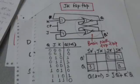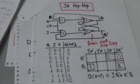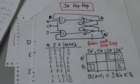In its 1-to-1 input behavior, inputs J and K of JK flip-flop behave like S and R inputs of RS flip-flop to set and clear the flip-flop.